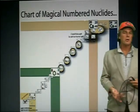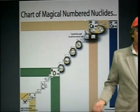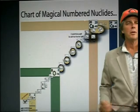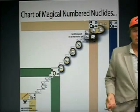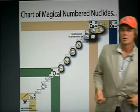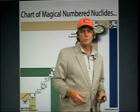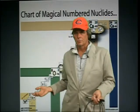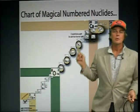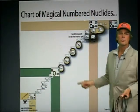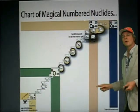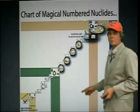So the chart of the nuclides. What we're showing here are the magic numbers — protons to neutrons.